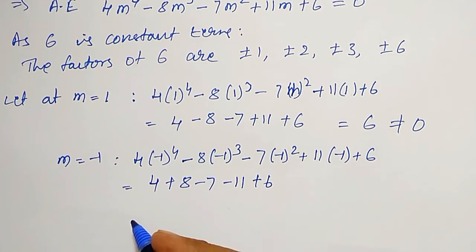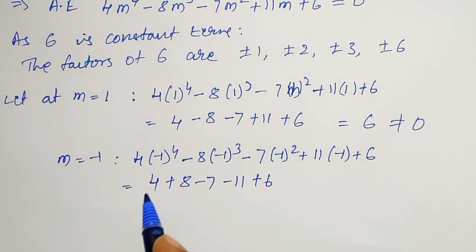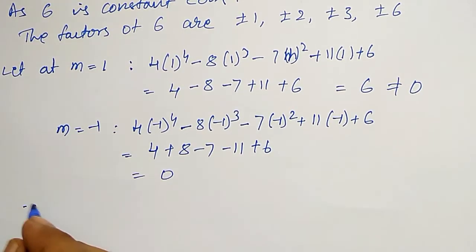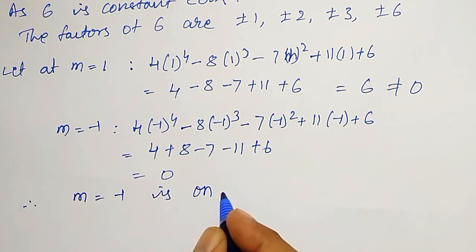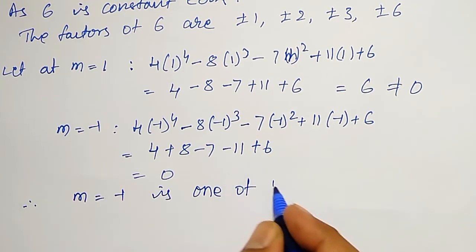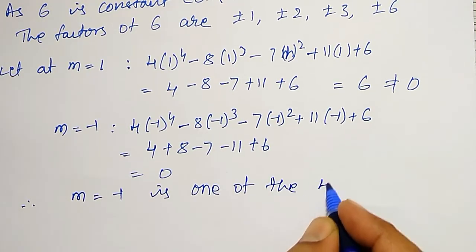Again, let me check what I am going to get. 6 + 4 = 10, 10 + 18 = 18, 18 - 18 = 0. Therefore, M = -1 is one of the roots, one of the 4 roots.